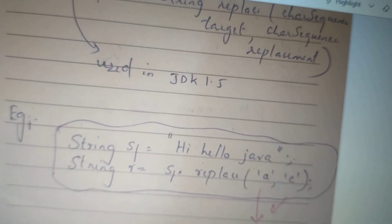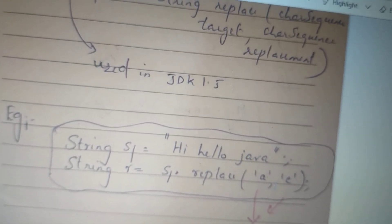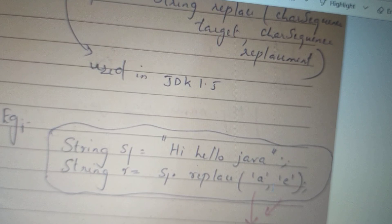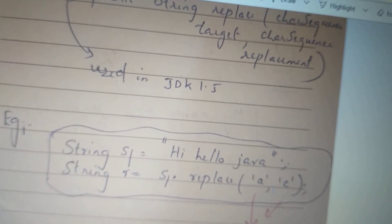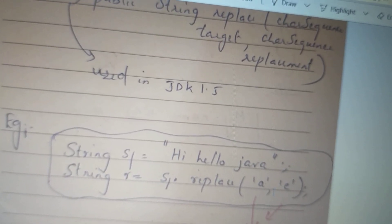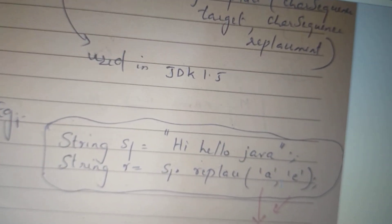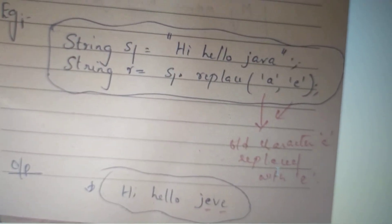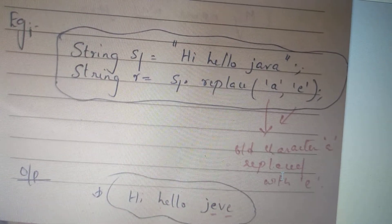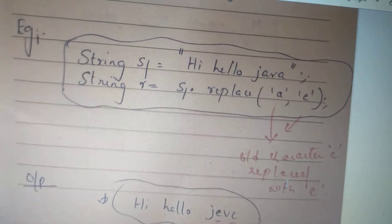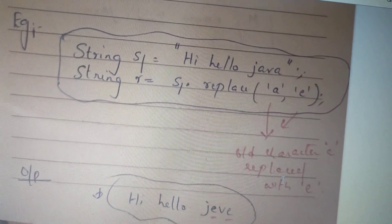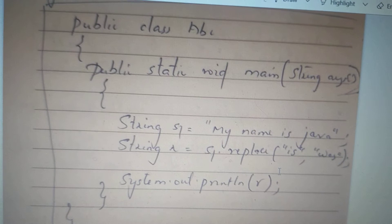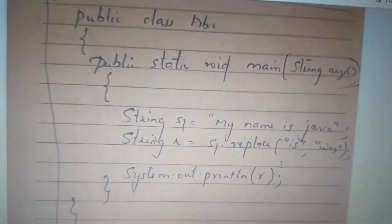The string S1 is called 'Hi Hello Java'. So the word 'Java' — J, E, V, E — we call it a particular character. If we call it a program, we call it a word.